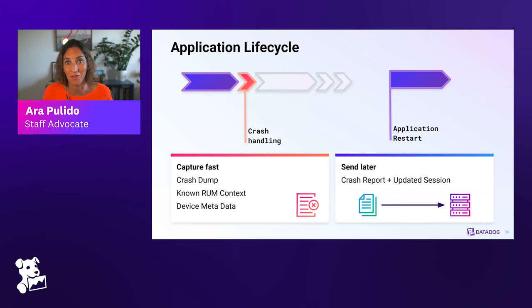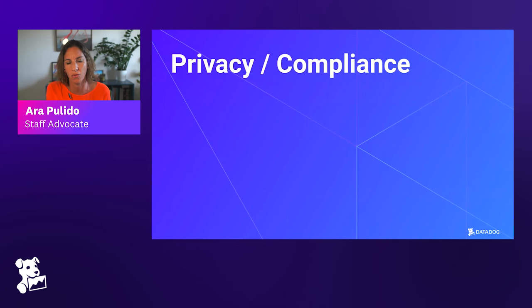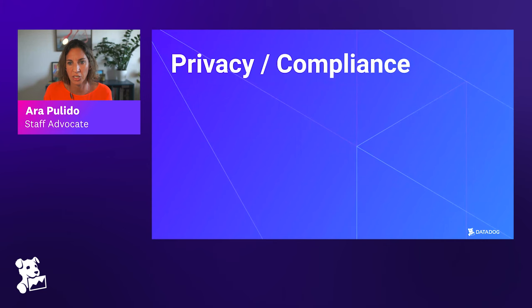Thanks for explaining how we get those crash reports even though the application actually crashed. When talking about mobile development, a concern for developers is privacy and compliance. This is important in all software development, but in mobile it feels even more critical because you're collecting data from a device that's always with the user and holds a lot of private information. So how are we dealing with that on the SDKs?